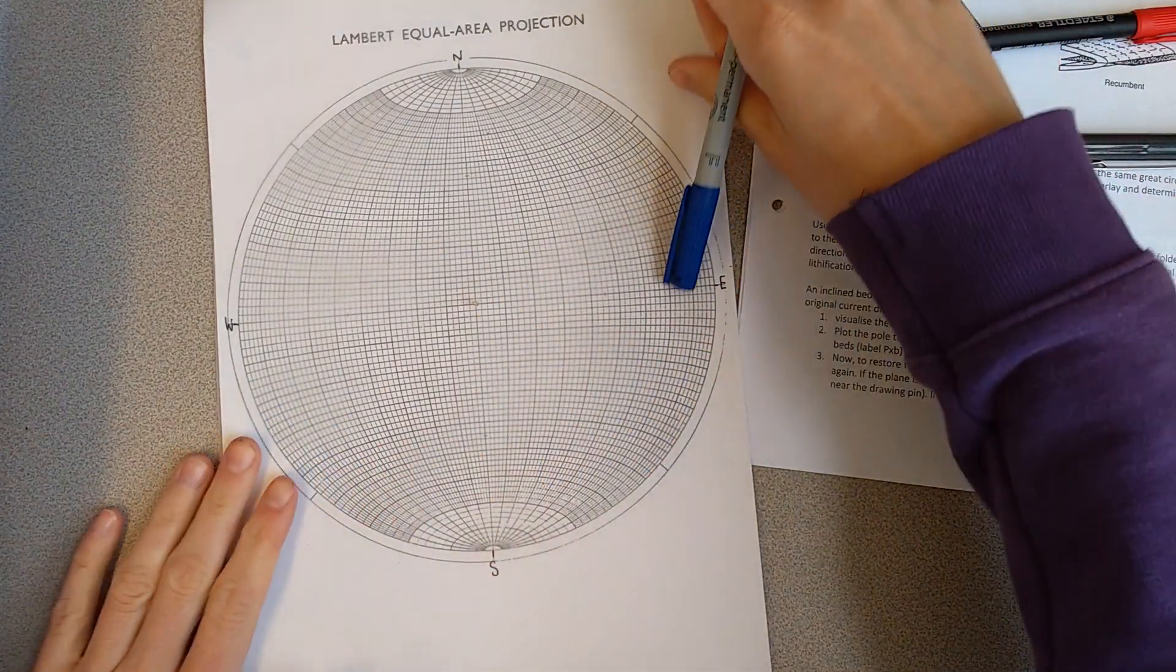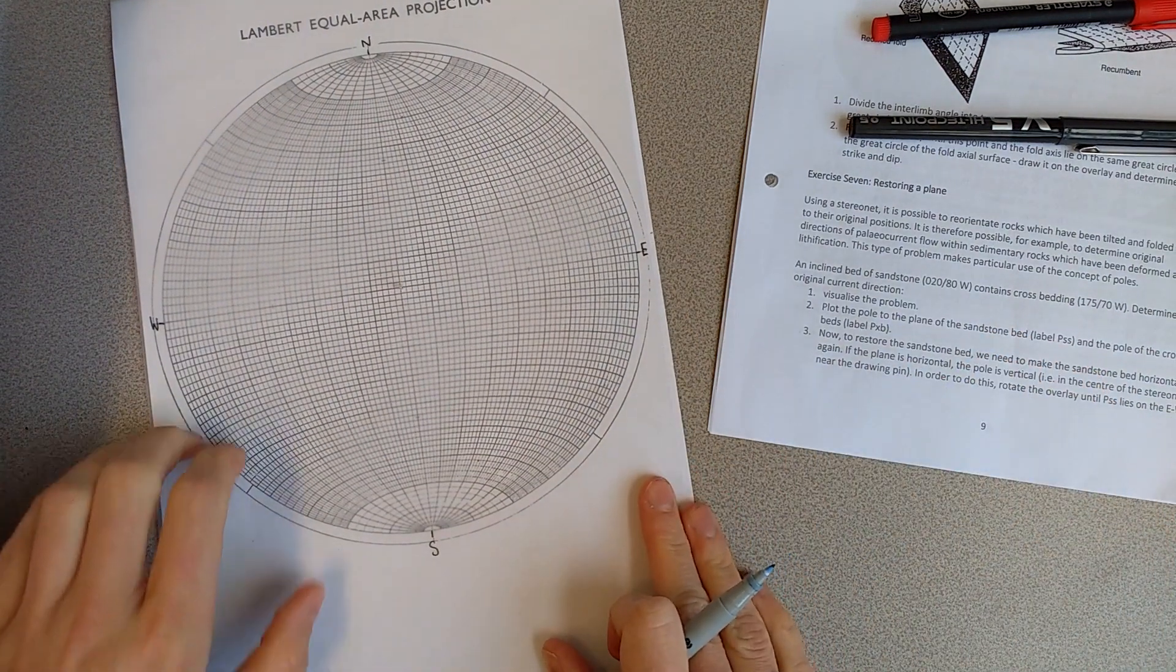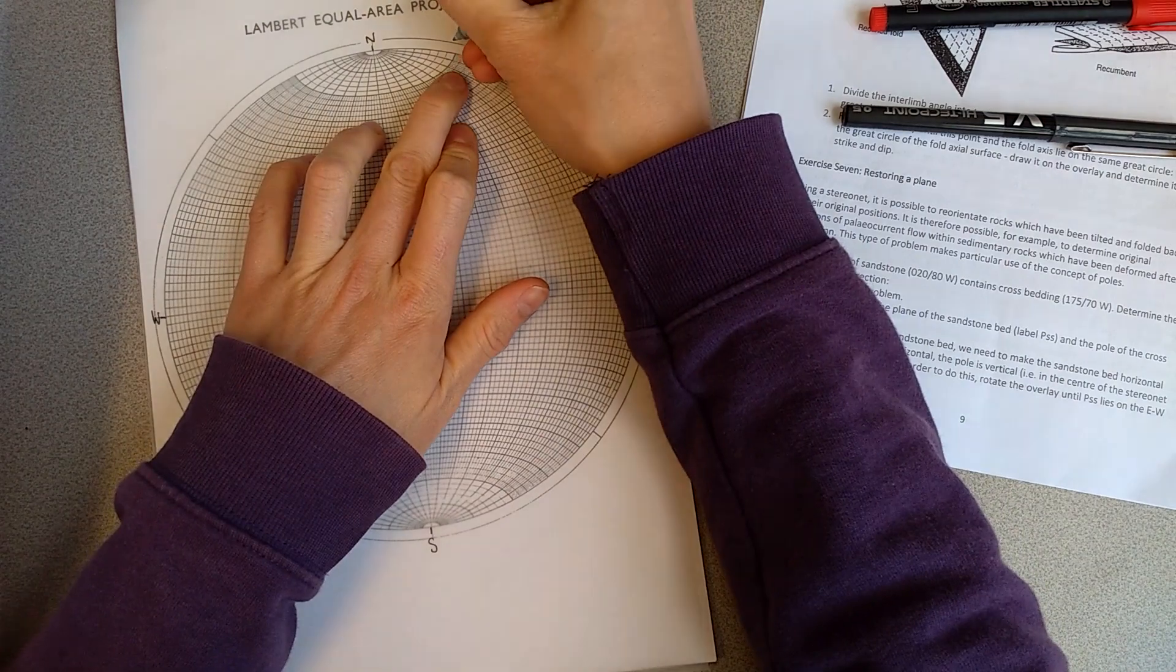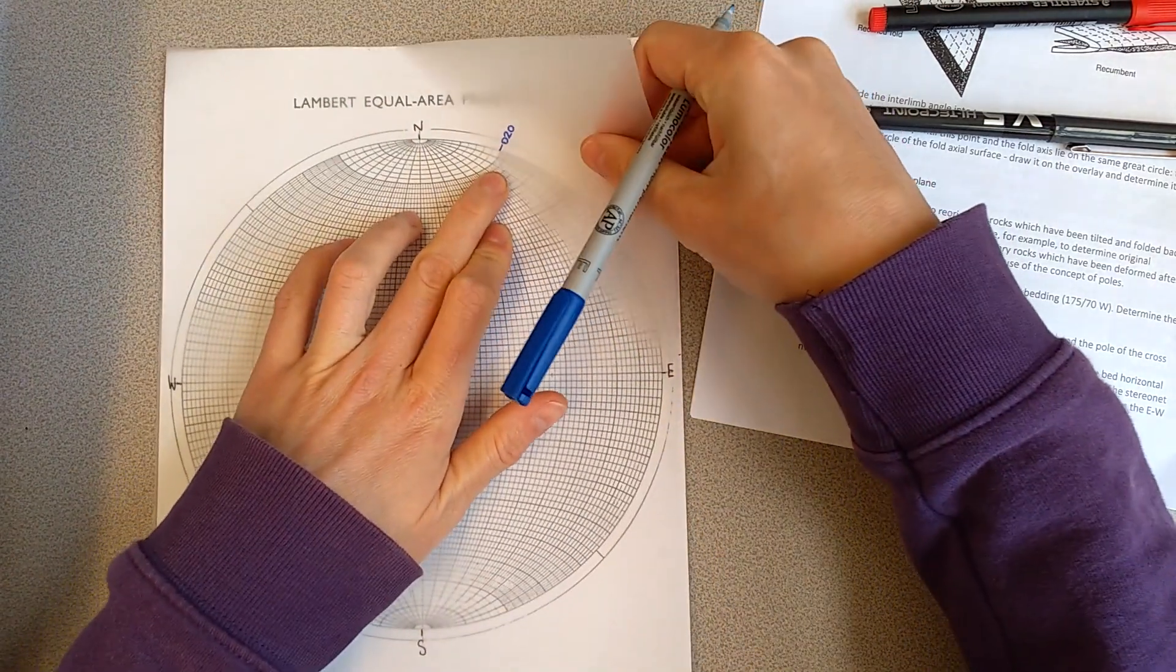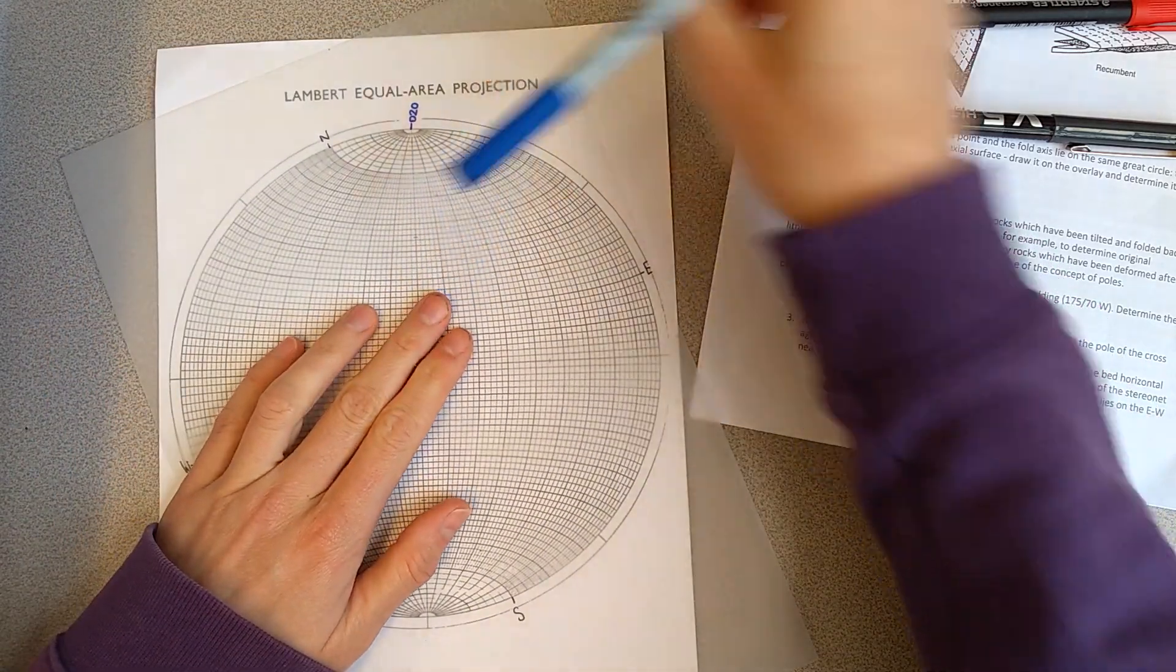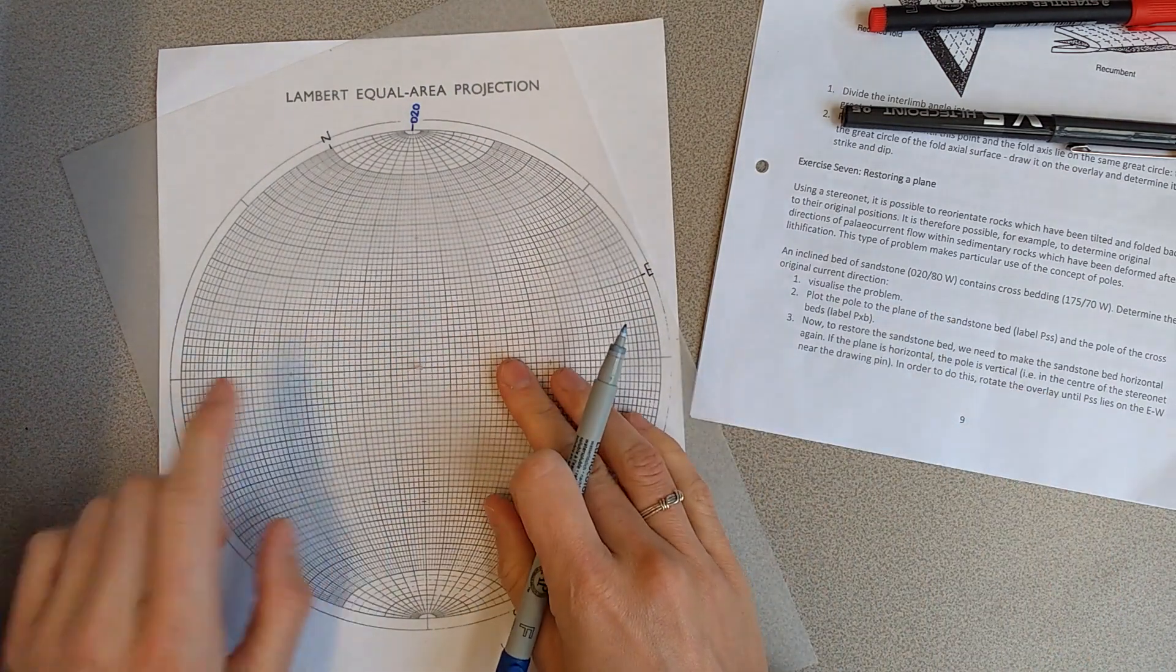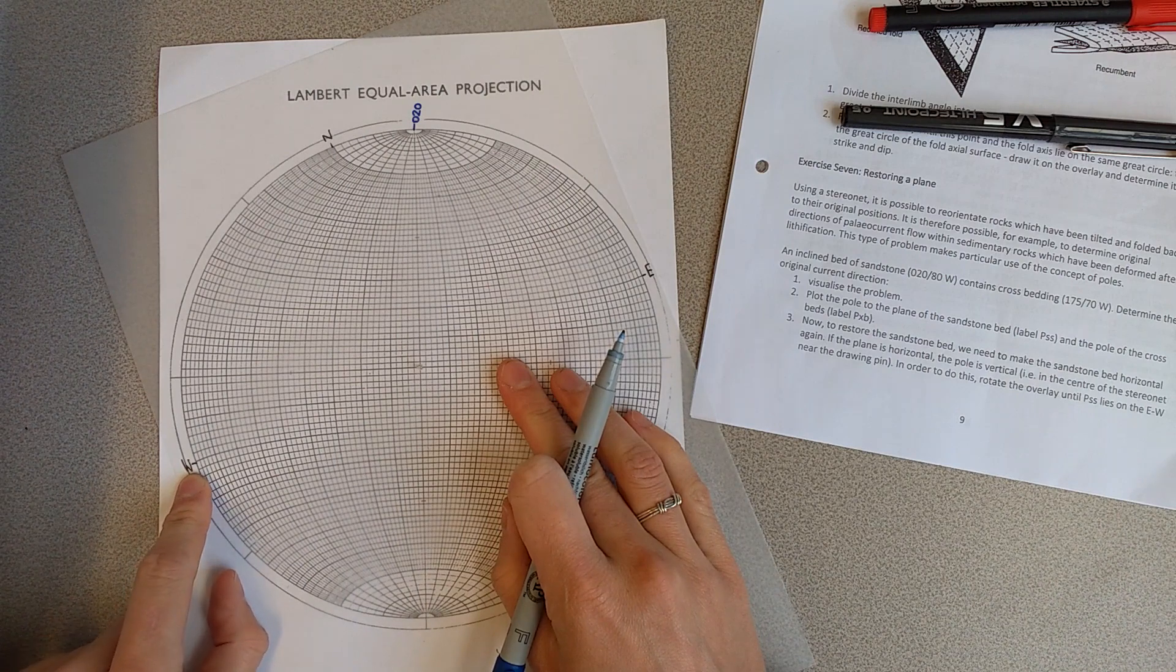We do this exactly the same as when we're plotting a plane. The bed is 020 degrees and it's dipping 80 to the west. So mark on 020, going to rotate that to north.